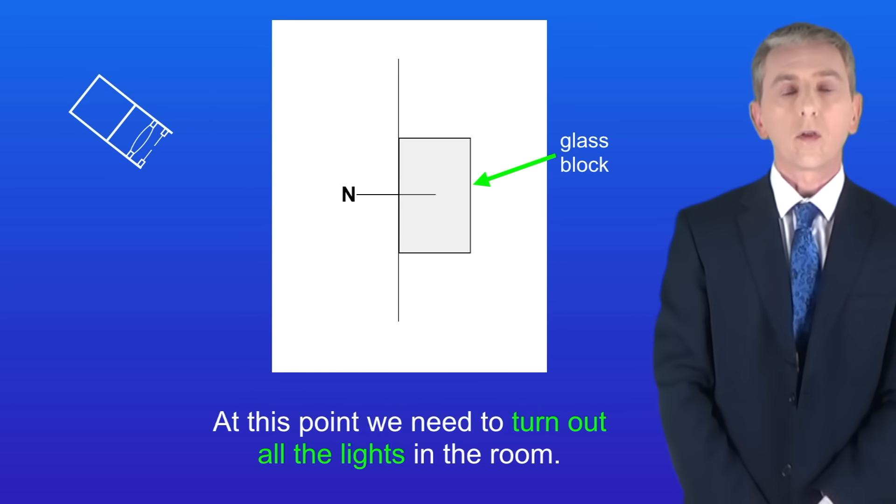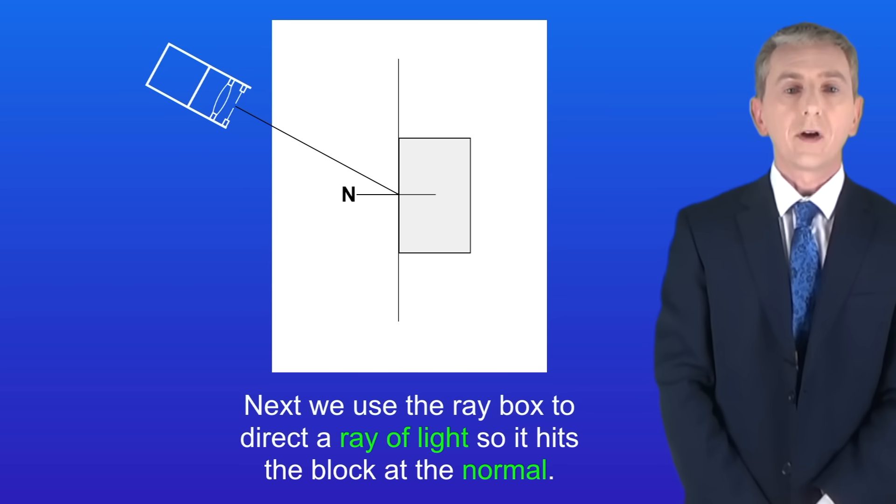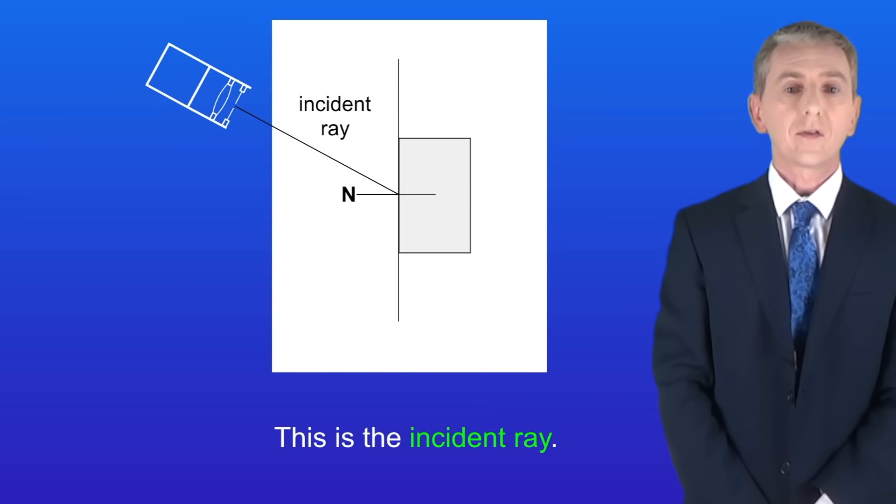At this point we need to turn out all the lights in the room. Next we use the ray box to direct a ray of light so it hits the block at the normal and this is the incident ray.